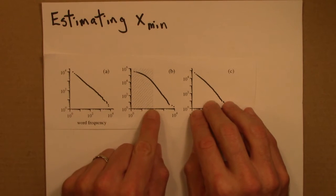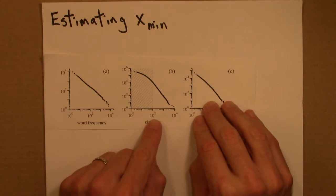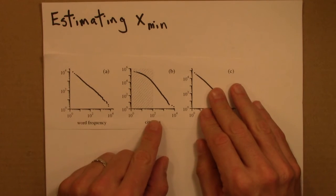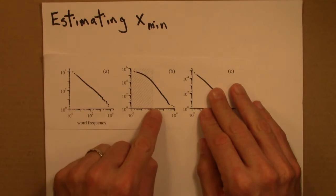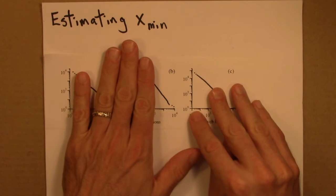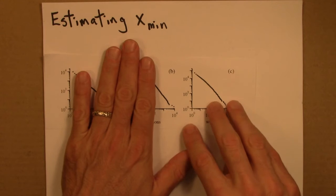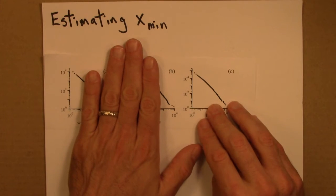And we'd like to choose the best xmin. And there's a tradeoff here. On the one hand, I want to choose xmin really large, so that I'm definitely in the power law region. But if I choose it too large, I'm throwing out a lot of data points, and that's going to make my fit less good.